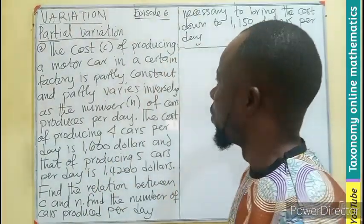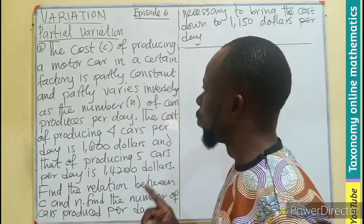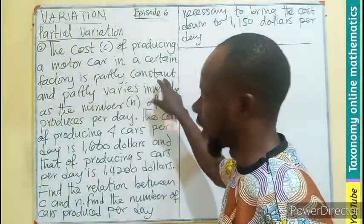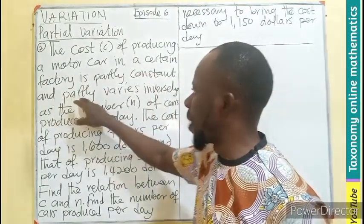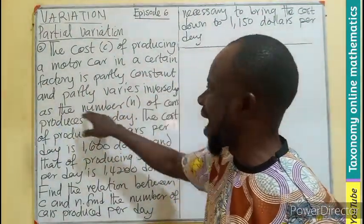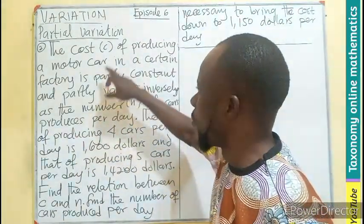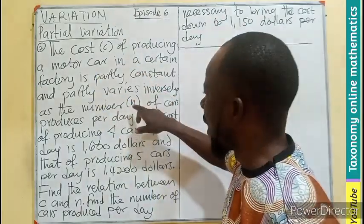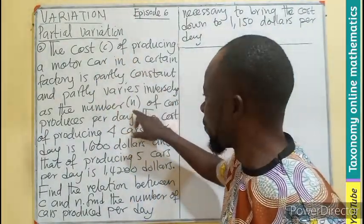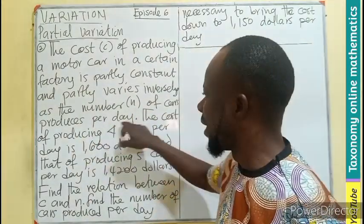The cost C of producing a motor car in a certain factory is partially constant and partially varies inversely as the number N. So these are the two variables we have: the dependent variable C and the independent variable N of cars produced per day.